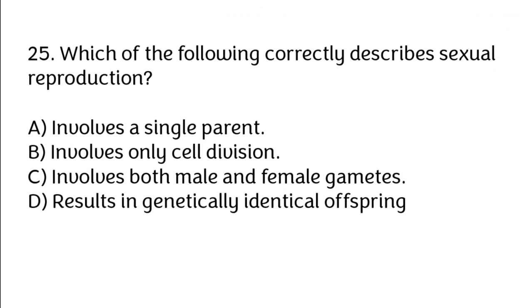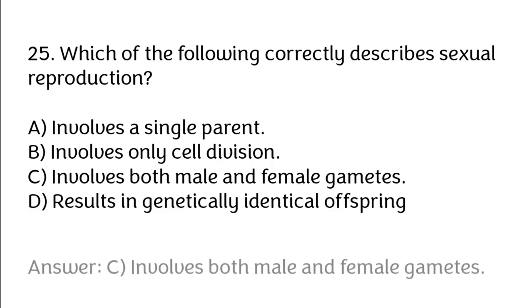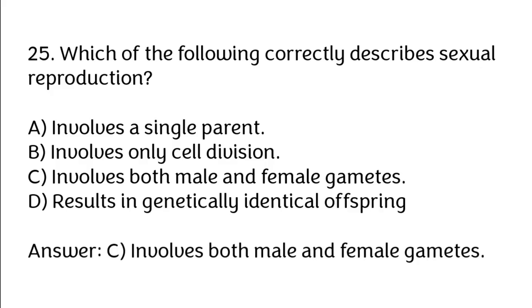Which of the following correctly describes sexual reproduction? A. Involves a single parent, B. Involves only cell division, C. Involves both male and female gametes, D. Results in genetically identical offspring. Correct answer is C. Involves both male and female gametes.